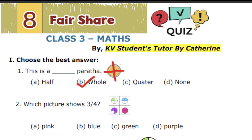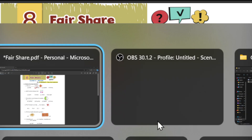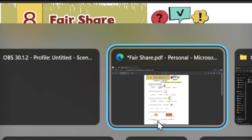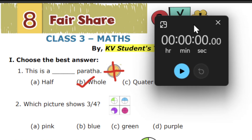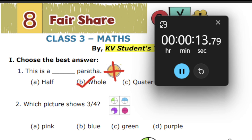Let's see the next question. Which picture shows three-quarters? There is a picture given and we have to find out which picture shows three-quarters. The options are pink, blue, green, and purple.